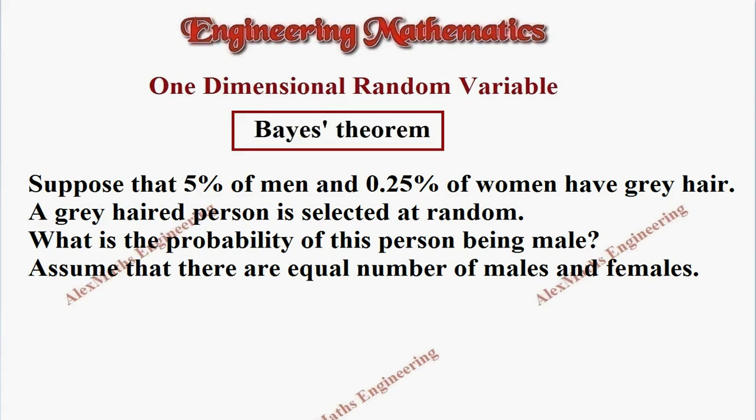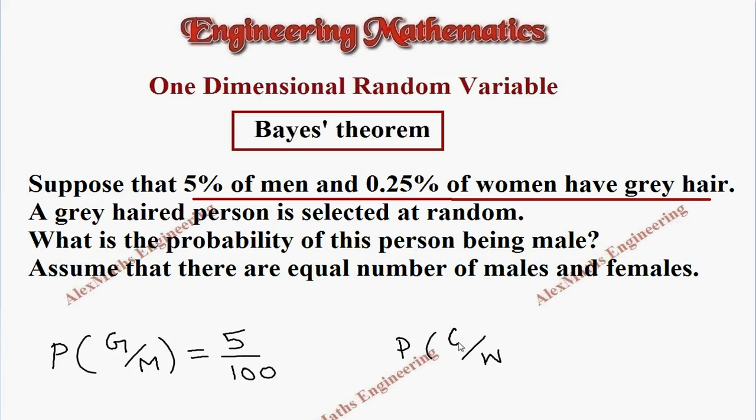The question they have given, suppose 5% of men and 0.25% of women have grey hair. So this we have to represent by the expression P of, we know it is a man, so we have to write it here M. And having grey hair, the grey hair probability is given. So it is P of G by M. So it is 5% of the men and 0.25% of the women have grey hair. So we know men and they have grey hair, which is 5 by 100. And we know it is a woman and they have a grey hair, the probability is 0.25 by 100.